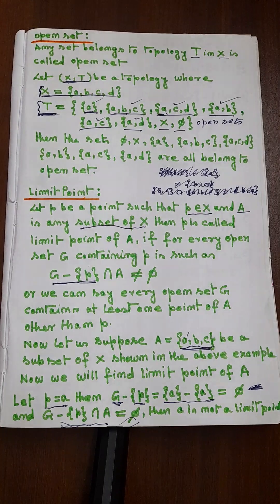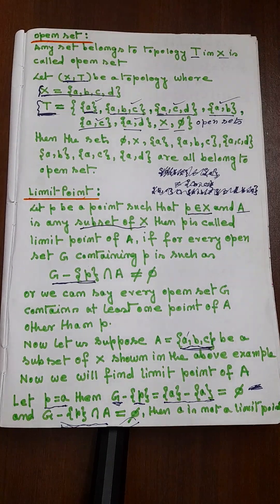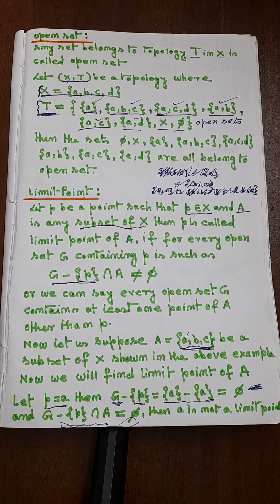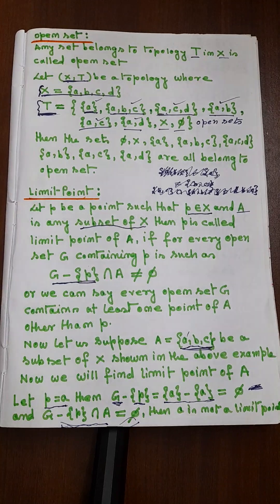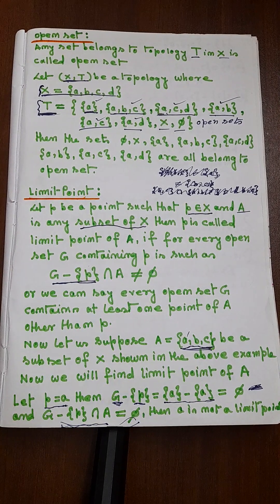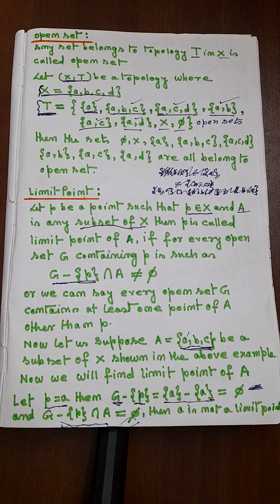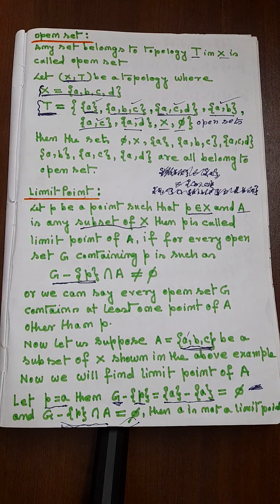Now, what is a limit point? Let P be a point such that P belongs to X, and A is any subset of X. Then P is called a limit point of A if, for every open set G containing P, G minus {P} intersection A is not equal to φ. In other words, every open set G contains at least one point of A other than P.